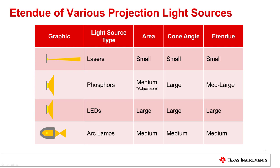LEDs also have wide Lambertian emission angles, but the area is dictated by the LED design and fixed by the manufacturer. LEDs generally have a large etendu relative to the other sources. A lamp's arc emits light in all directions and is shaped by the elliptical reflector for use in a projection system. The area emitting the light is actually a volume taken up by the arc plasma, resulting in a medium etendu relative to the other available sources.